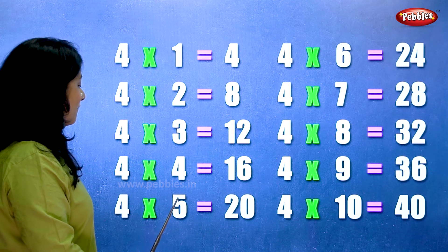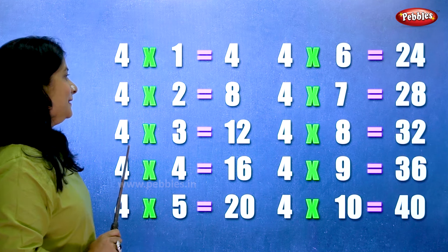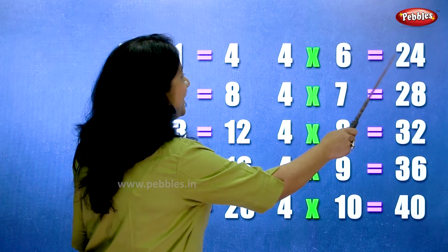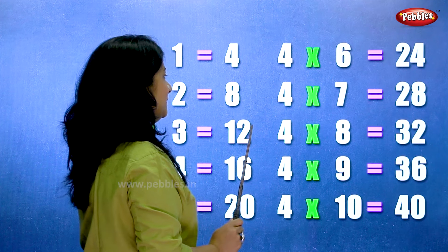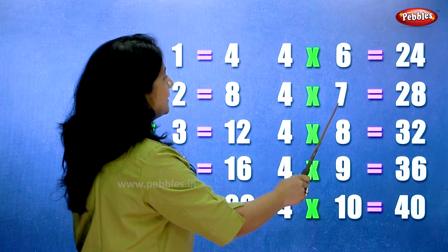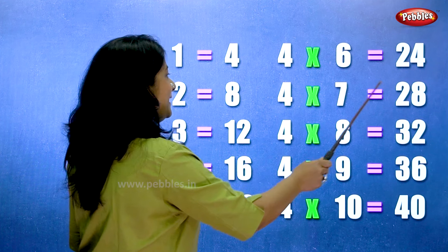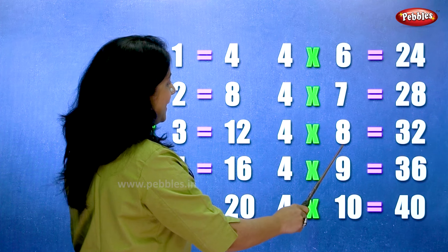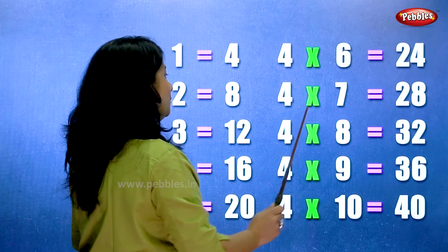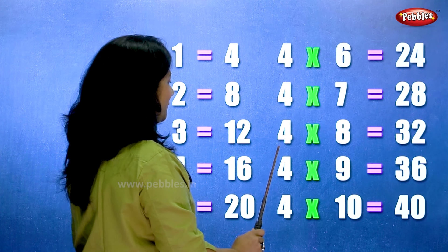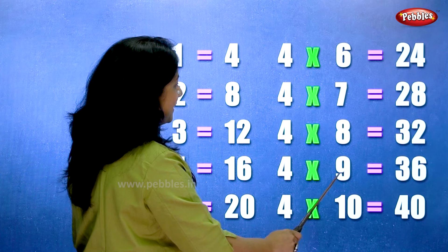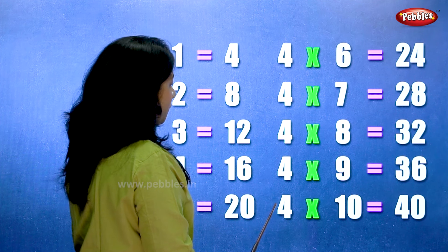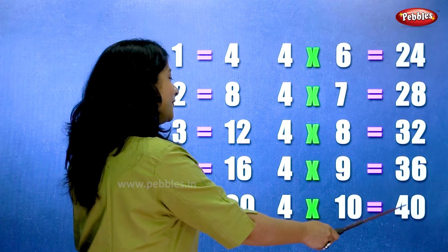Let's write the table of 4. Four sixes are twenty-four. Four sevens are twenty-eight. Four eights are thirty-two. Four nines are thirty-six. Four tens are forty.